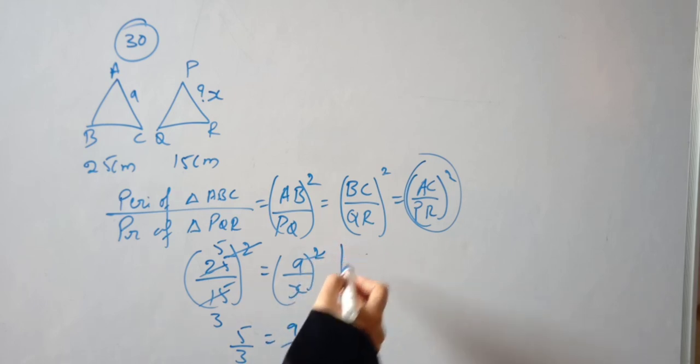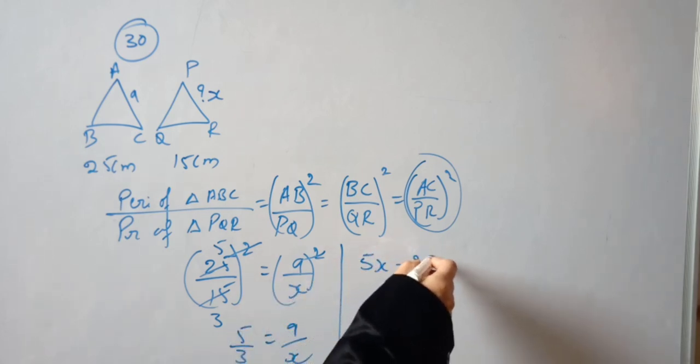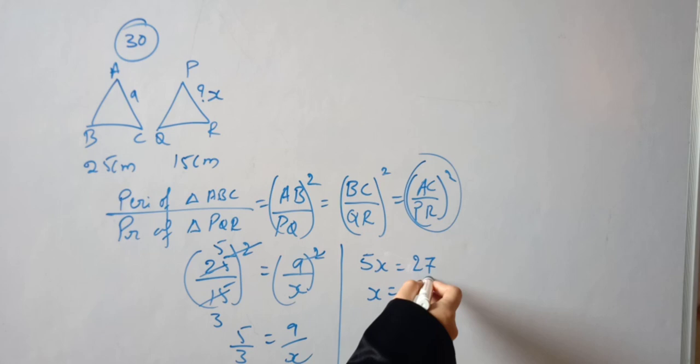Now cross multiply: 5 into X, 5X is equal to 9 times 3 is 27. 5X is equal to 27, so X is equal to 27 upon 5. 5 times 1 is 5, 5 times 5 is 25.